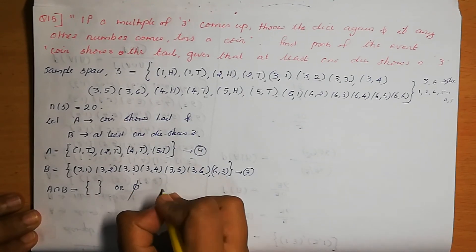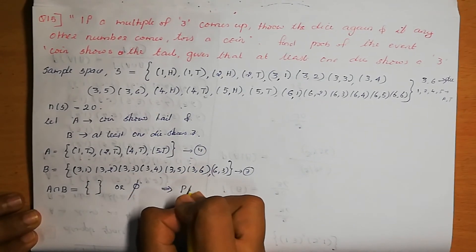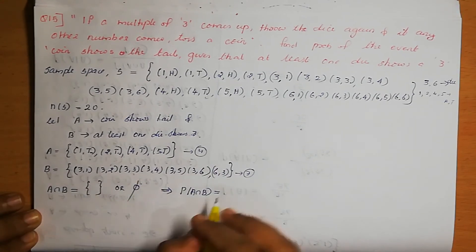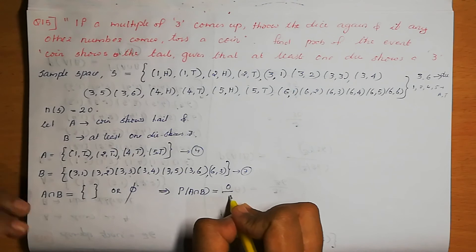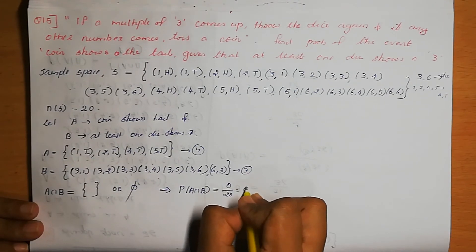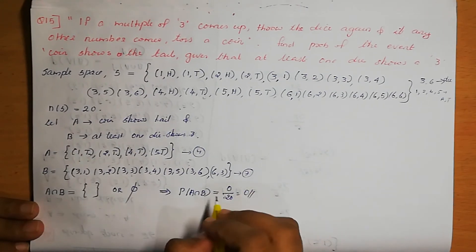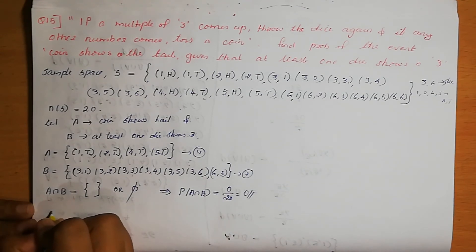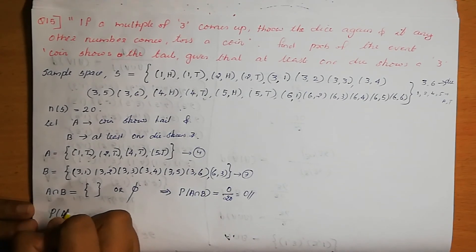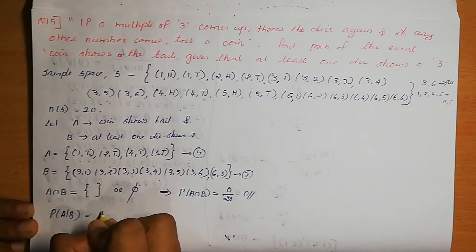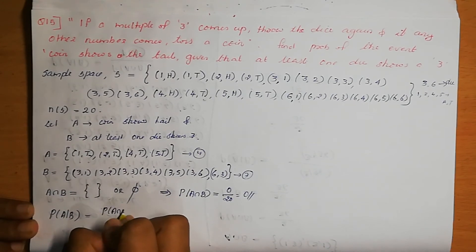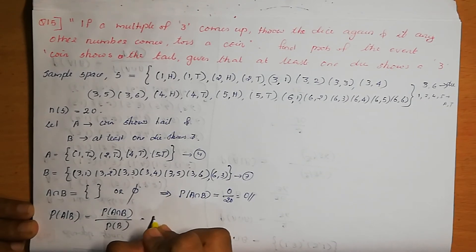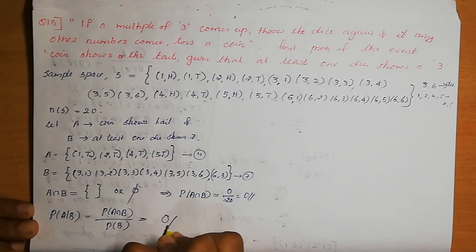Since A∩B is a null set, P(A∩B) = 0/20 = 0. Therefore P(A|B) = P(A∩B)/P(B) = 0. The answer is 0.